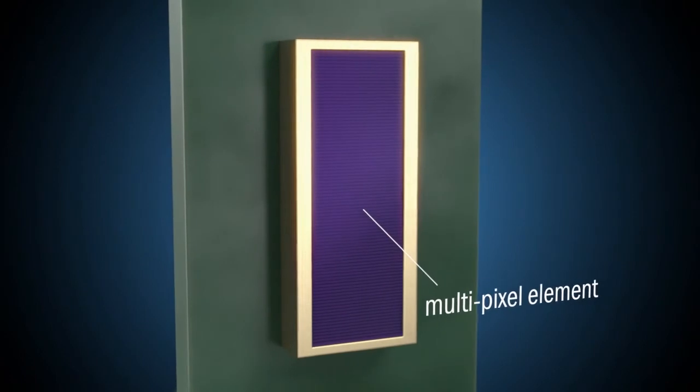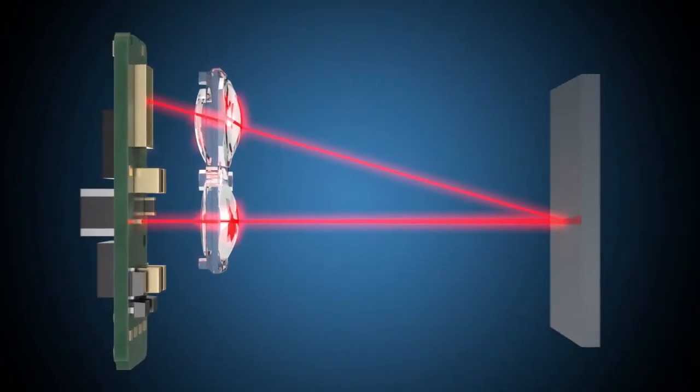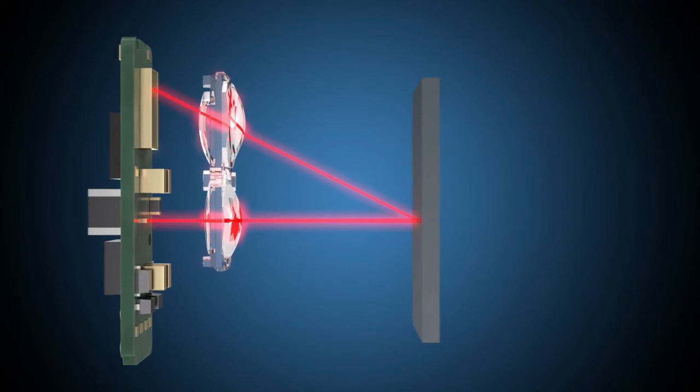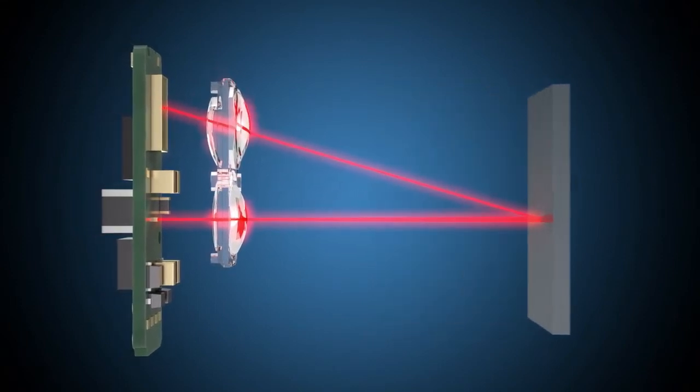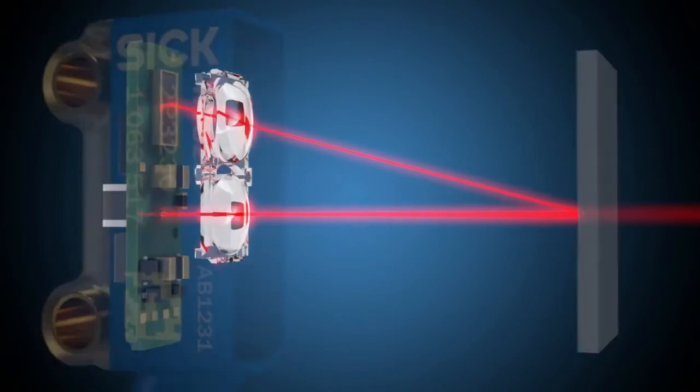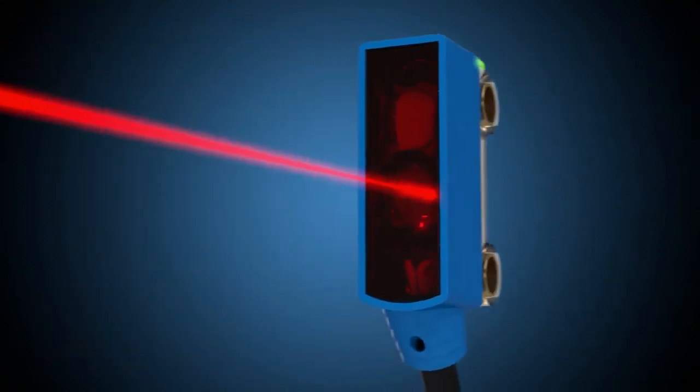The multipixel element that forms part of the SIRIC chipset enables highly precise setting of the switching distance, reliable object detection and differentiation between different backgrounds. The only thing you won't see with the W2-S2 sensors is a lack of choice.